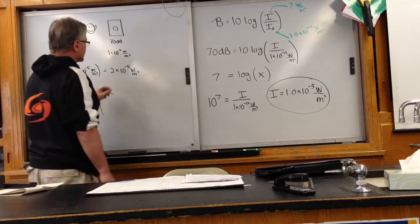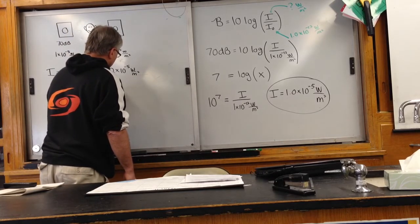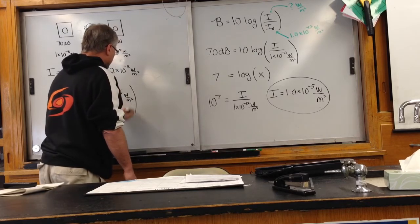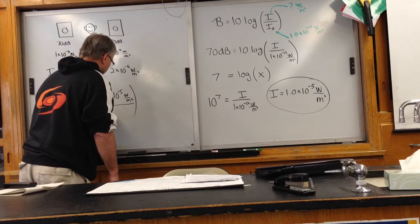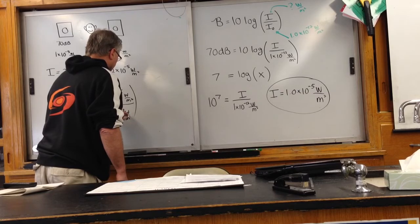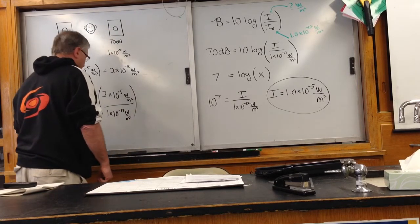Our intensity is 2 times 10 to the minus 5 watts per meter squared, and then that's divided by the reference level for a human, 1 times 10 to the minus 12 watts per meter squared. And then that will give us our final answer in the decibel system.